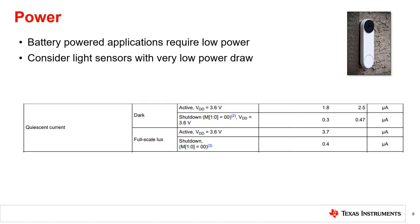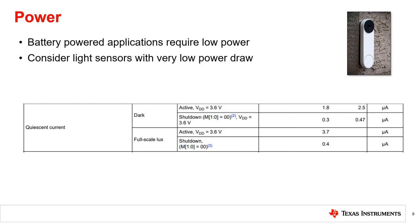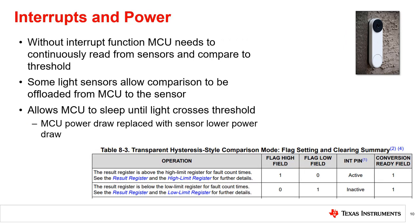In some applications, such as video doorbells, the product is battery powered and expected to last for long periods of time. In these cases, using a light sensor with very low power draw, such as TI's OPT-3005, will minimize the effect of the sensor on the overall system power draw. Another important consideration in low power applications is how often the microprocessor needs to read from the sensor.